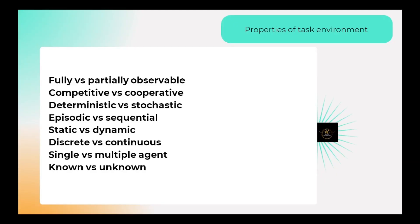Now let's look at properties of task environment. The first property is fully observable versus partially observable. In a fully observable environment, the agent can completely sense the full state of the environment. For example, in a chess game, an agent can see all possible moves — this is fully observable. In a card game, the agent cannot see the opponent's cards, so that is partially observable.